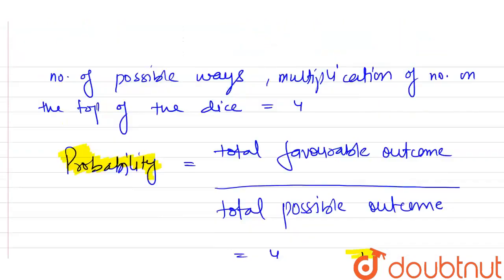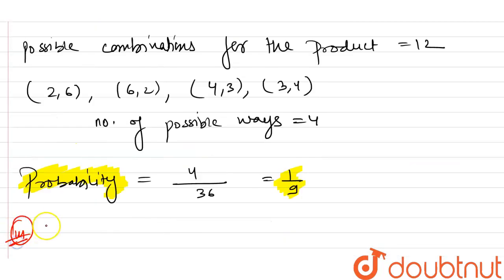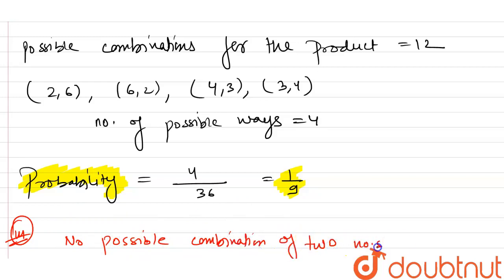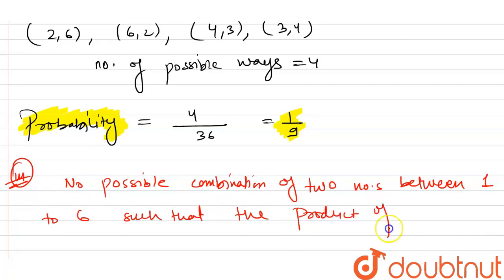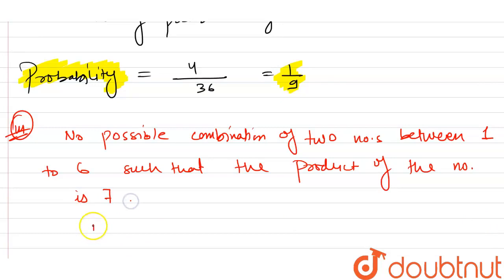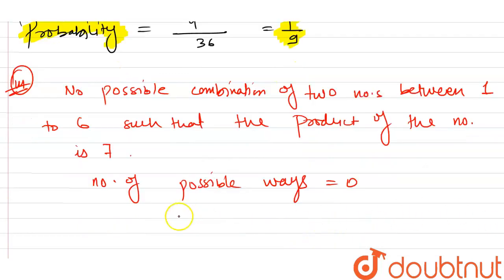In the last part, we need to find the probability that the product of the two numbers on the top of the dice is 7. There is no combination of two numbers between 1 and 6 such that their product equals 7. So the number of possible ways is 0, and therefore the probability is 0.